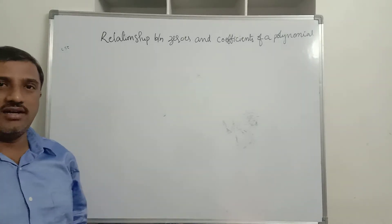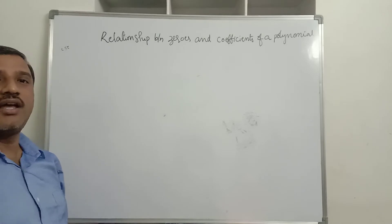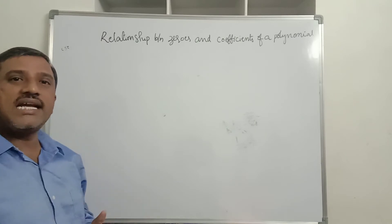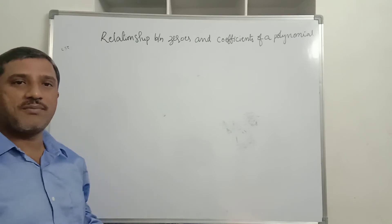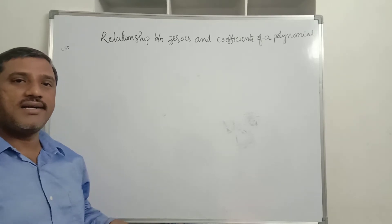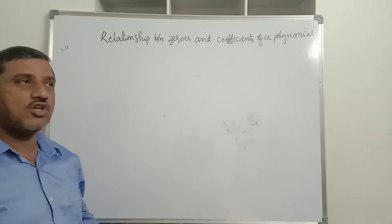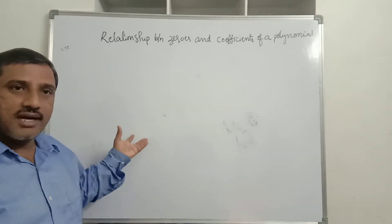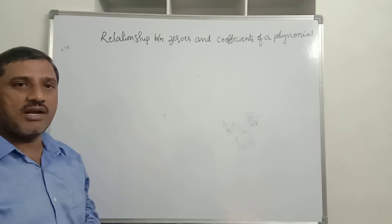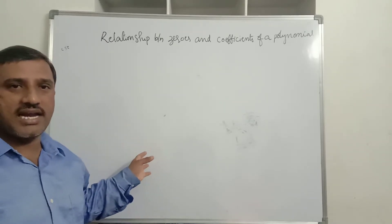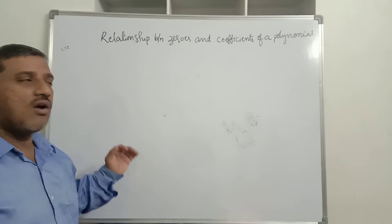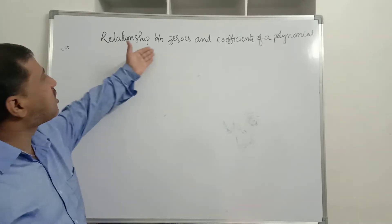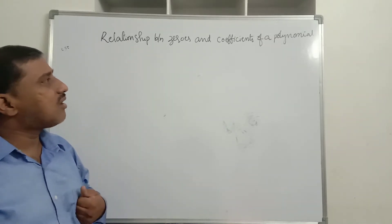Namaste children, I hope you are fine. In the last class we discussed the introduction of the polynomial chapter — degree of a polynomial, value of a polynomial, zero of a polynomial, factors of polynomials, and especially the geometrical meaning of zero of a polynomial. We also discussed the graphical representation of a linear polynomial and the nature of the quadratic equation graphically. Now we are going to discuss the relationship between zeros and coefficients of a polynomial.